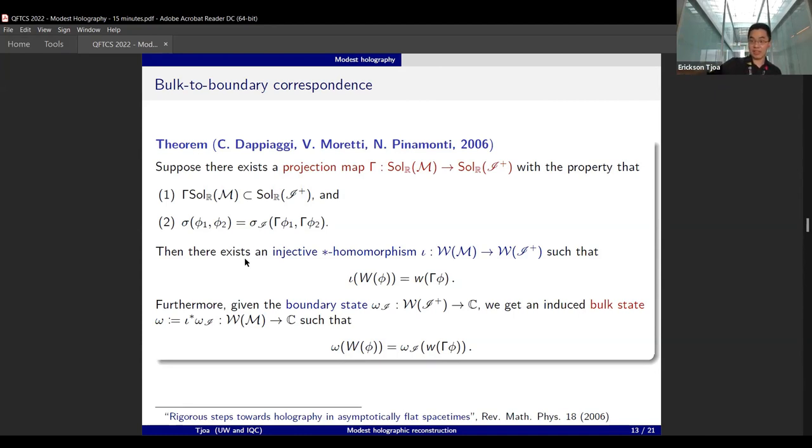Furthermore, this injective star homomorphism that respects all the Weyl algebra properties can be used to pull back this boundary BMS-invariant state to get a bulk state that respects this projection.